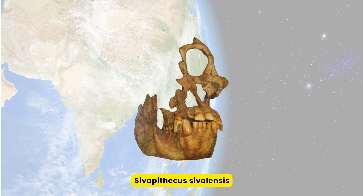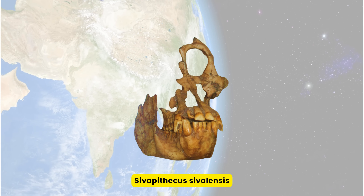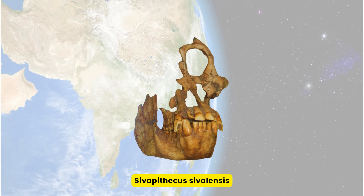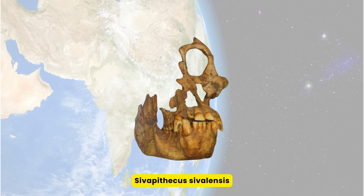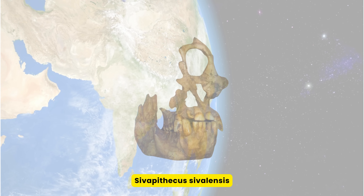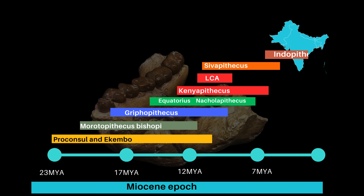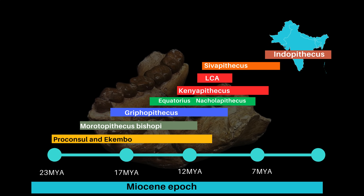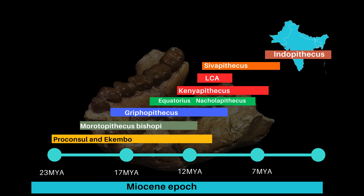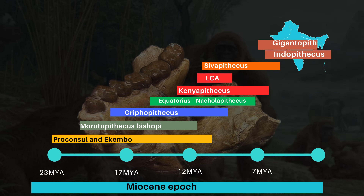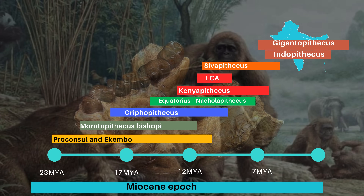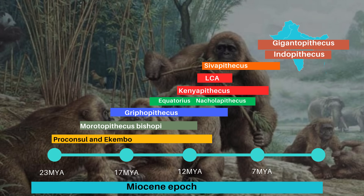Sivapithecus had large molars with broad flat cusps and thick enamel, similar to fossil humans like Australopithecus and Gryphopithecus, and a powerful jaw adapted for eating various types of food, possibly including hard items during food scarcity. Sivapithecus survived for over 6 million years in Asia, ranging from Turkey to Thailand. Indopithecus, a large relative of Sivapithecus, lived around 6.5 million years ago in India and may be ancestral to Gigantopithecus, the largest primate ever known. Gigantopithecus lived until about 300,000 years ago in China and is confirmed to be related to orangutans.